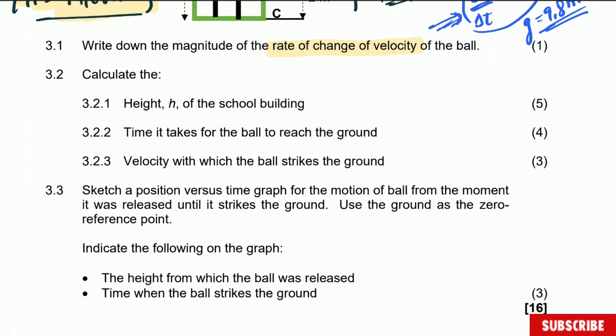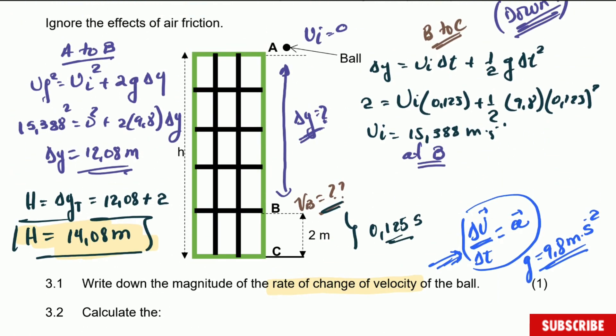Question 3.2.2 says calculate the time it takes the ball to reach the ground — the total time. We have the time from B to C which is given, but we do not have the time from A to B, so that is what we're going to calculate. We are going to calculate the time from A to B and then add the two times to get the total time.